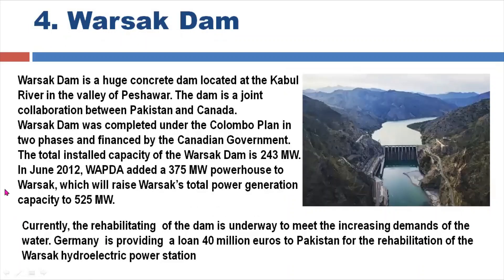The Warsak Dam is a huge concrete dam located on the Kabul River in the valley of Peshawar, KPK. The dam is a giant collaboration between Pakistan and Canada. Warsak Dam was completed under the Colombo Plan in two phases and financed by the Canadian government. The total installed capacity of Warsak Dam is 243 megawatts.